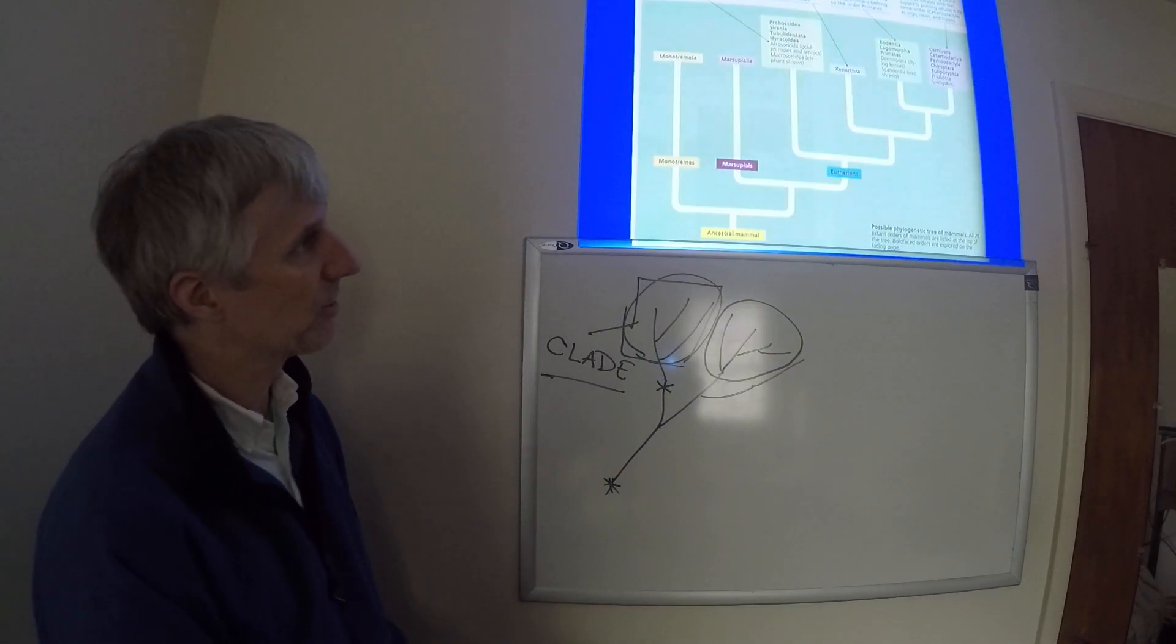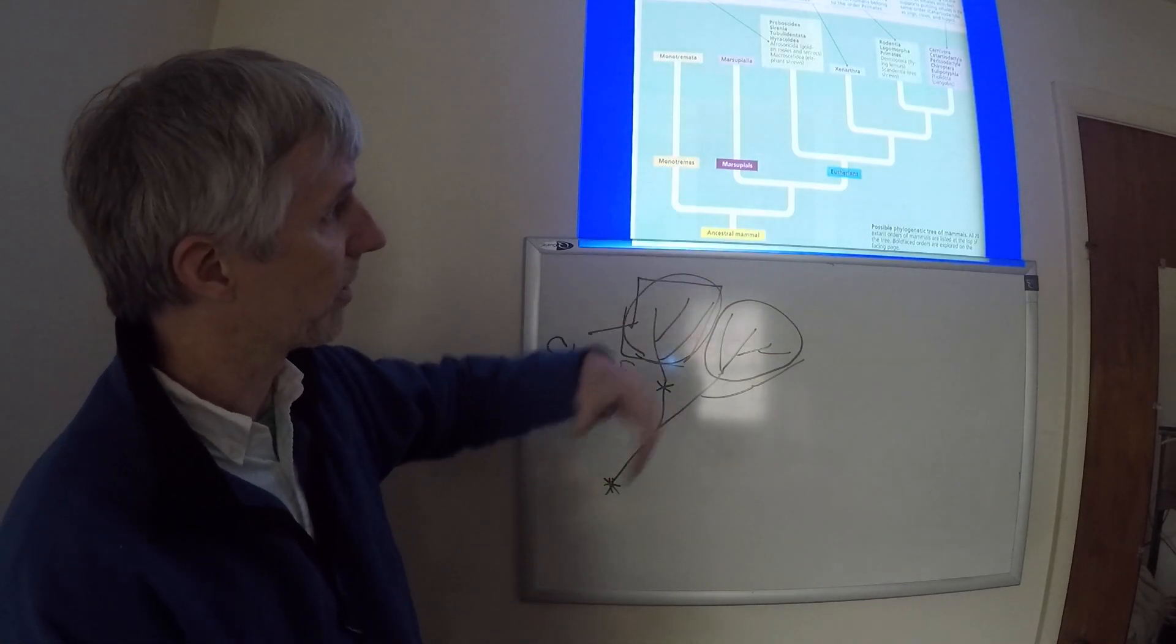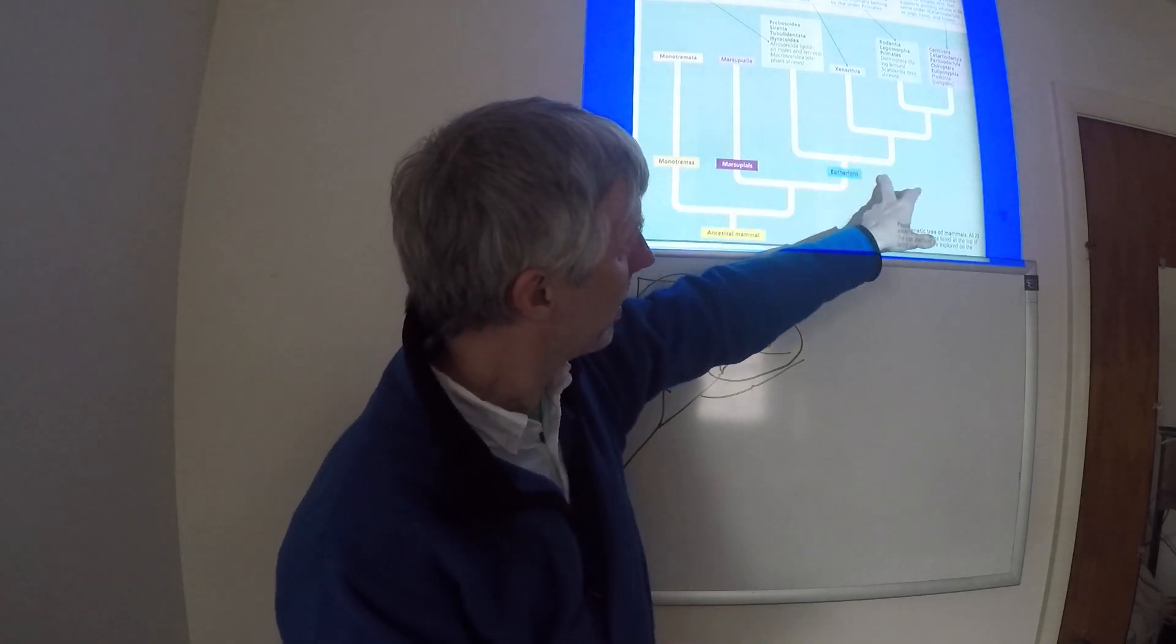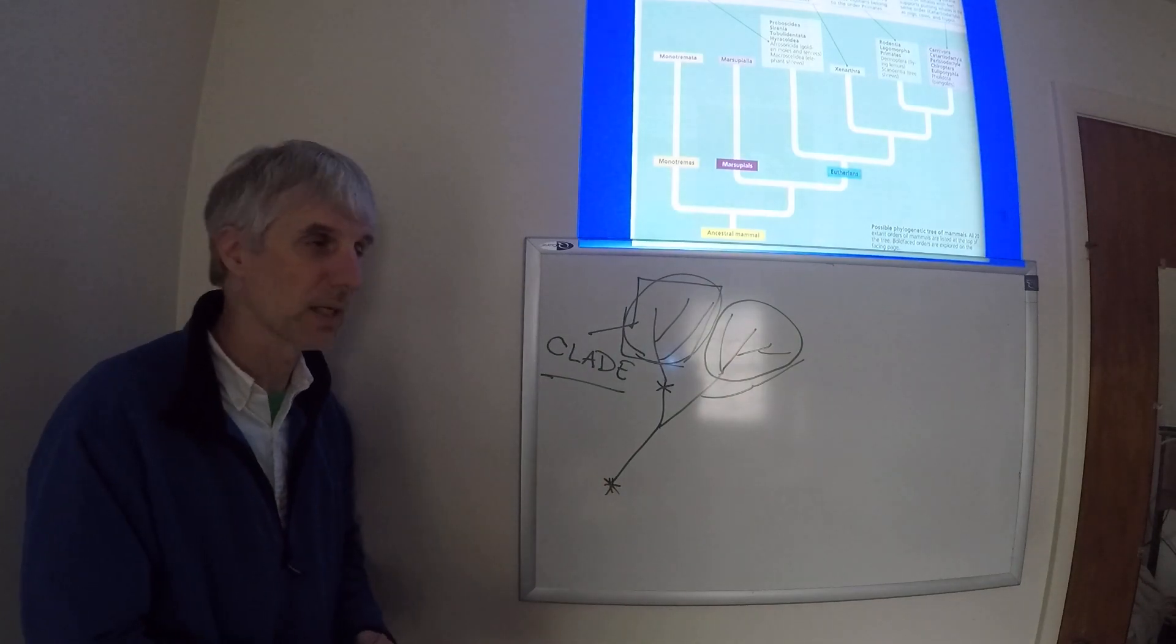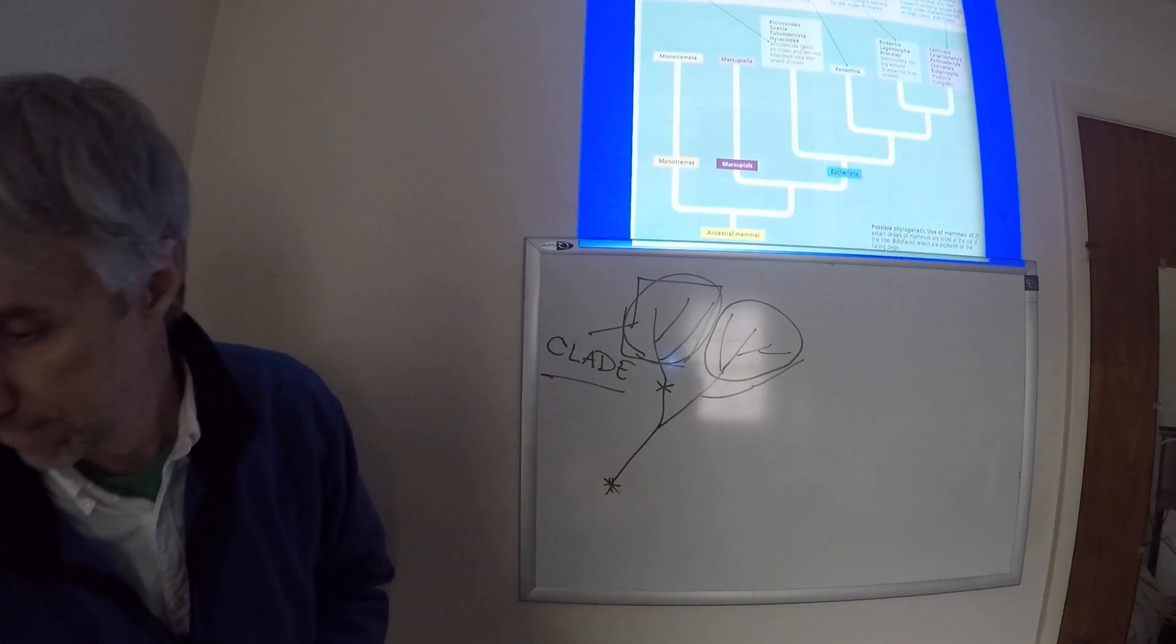So the three clades of life are the three domains. That phylogenetic tree that we looked at over here, here is a clade here. The placental mammals represents a clade. They all come back to a single individual type.